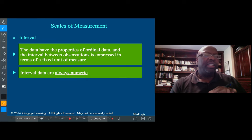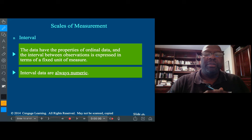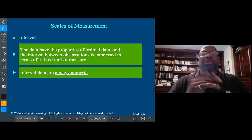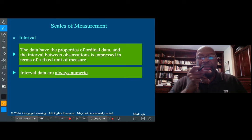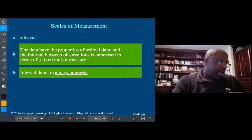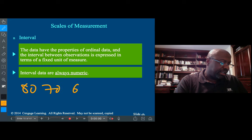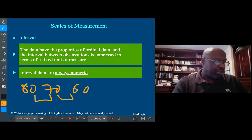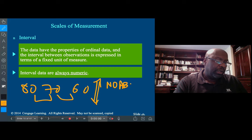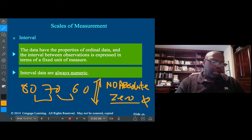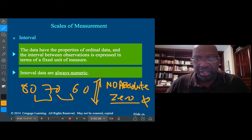We have interval data. Interval data tends to be a little tricky to grasp. The data have properties of ordinal data, so there's this hierarchy, and there's usually some fixed unit of measure that expresses the values between two measures. For example, with temperature, we have degrees - one degree, two degrees, three degrees. There are units of measure in between, which in this case is a degree.